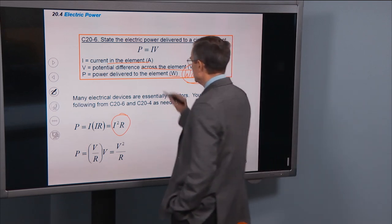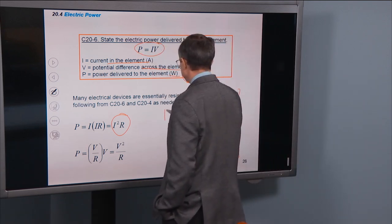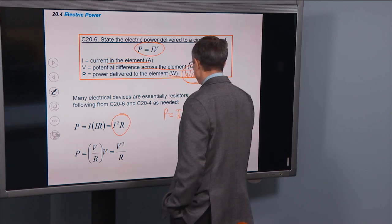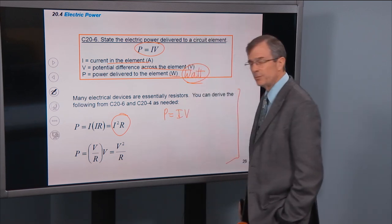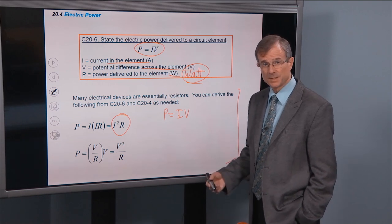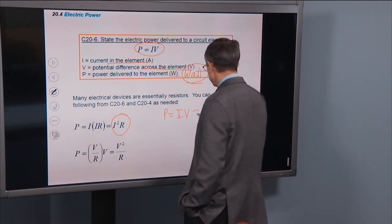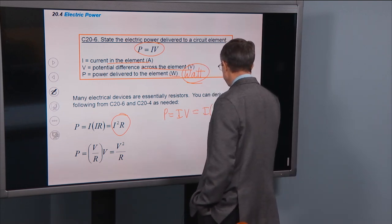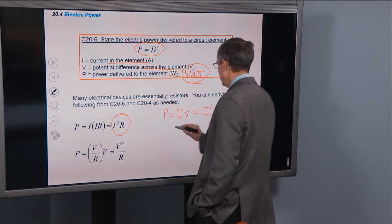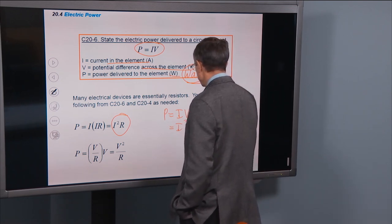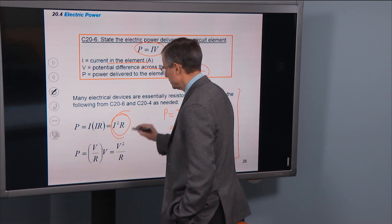Well power is I times V, but V is I times R. That's the definition of resistance. And that just gives you I squared R, this relationship here.